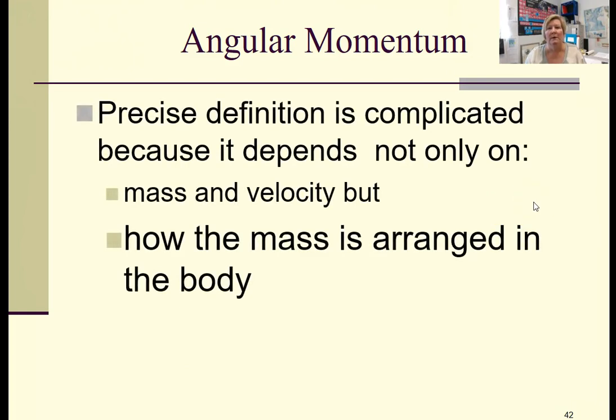We aren't going to be concerned about the formula for angular momentum, but we can state that mass and velocity are important in determining angular momentum, and the complicating factor is the distribution of mass. How is the mass arranged in the body?